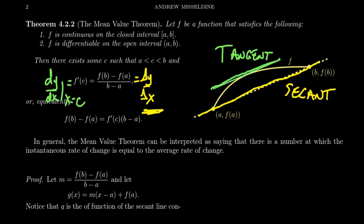We are saying that our function will have some place where the tangent line is parallel to the secant line. Although we're guaranteed the existence of some such point, its location we have no information about except that it's somewhere between a and b. But somewhere, the tangent line has to be parallel to the secant line — that's what the mean value theorem guarantees. That's why we call it the mean value theorem: the average rate of change is somewhere equal to the instantaneous rate of change.